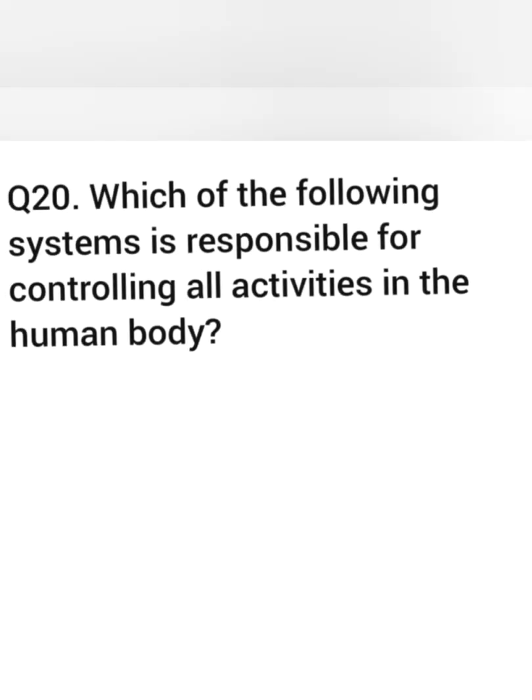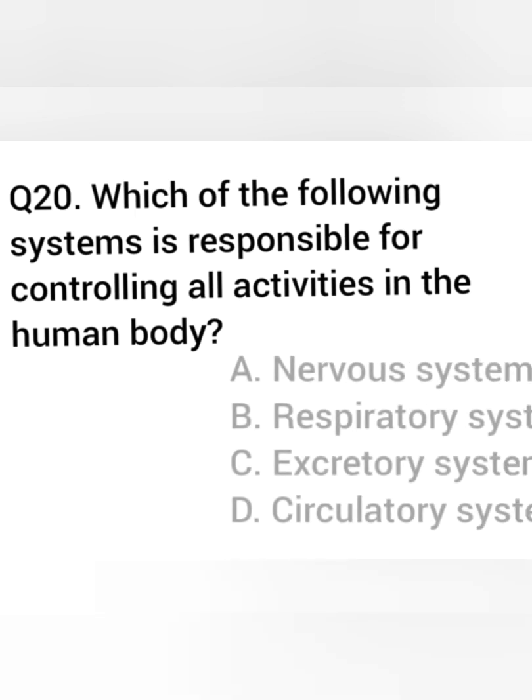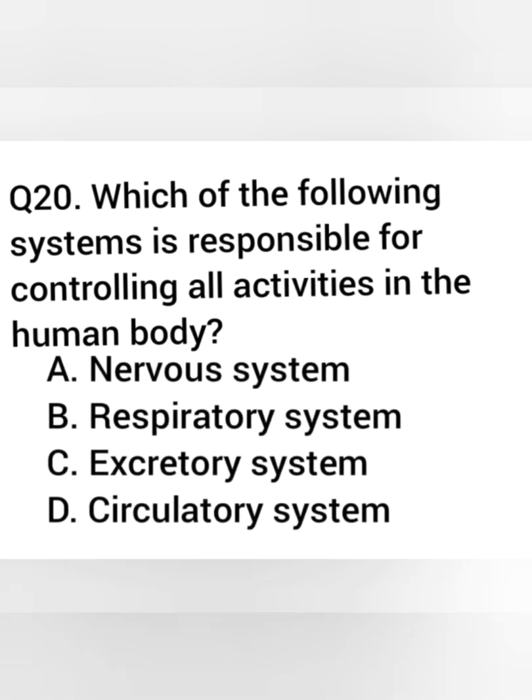Question 20. Which of the following systems is responsible for controlling all activities in the human body? Answer: Nervous system.